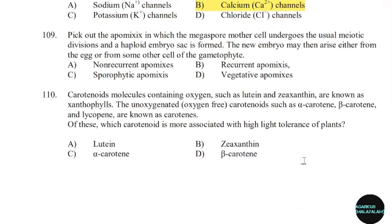109th question: Pick out the apomixis in which the megaspore mother cell undergoes the usual meiotic division and the haploid embryo sac is formed. The new embryo may then arise either from the egg or from some other cell of the gametophyte. Correct answer: Option A.